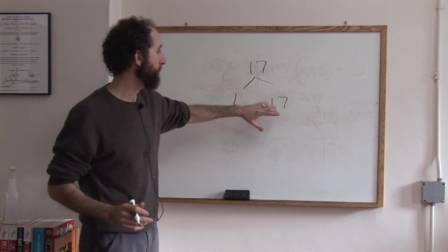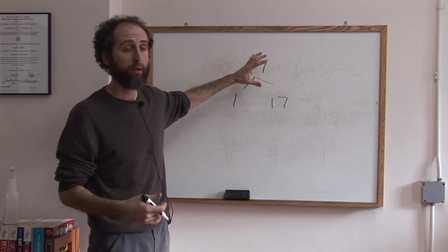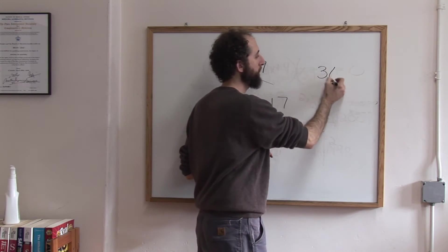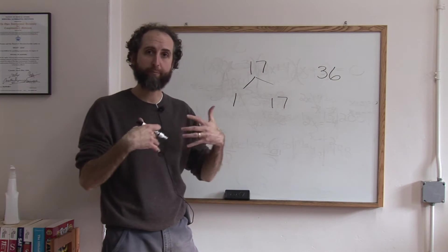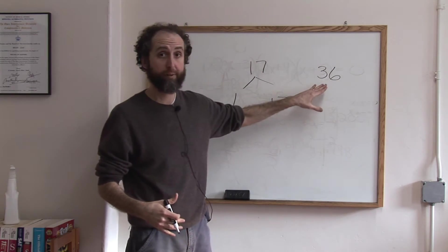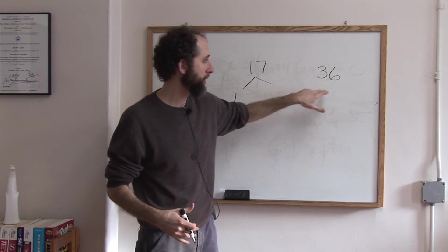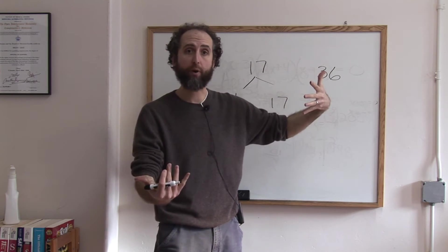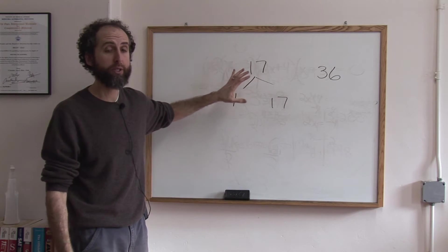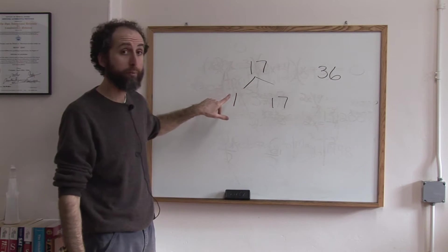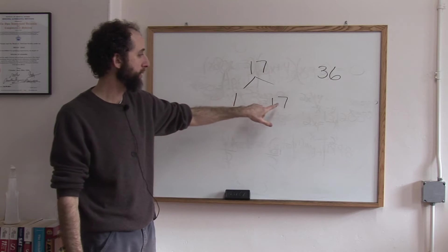Factors means the numbers that could be multiplied to get 17. Like the number 36 has lots of factors. There's lots of pairs of numbers that multiply to be 36: 1 times 36, 2 times 18, 6 times 6. That's not prime. 17 is a prime number because it only has two factors. The only numbers that multiply to be 17, 1 times 17.